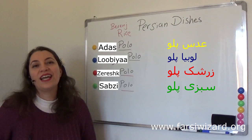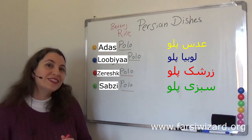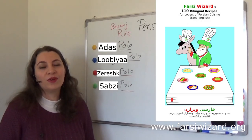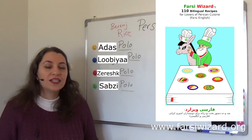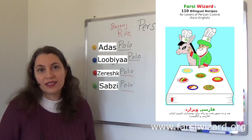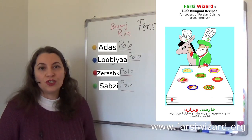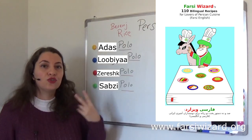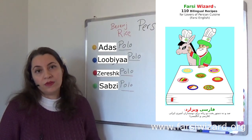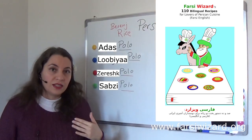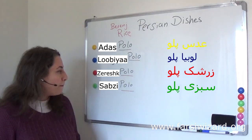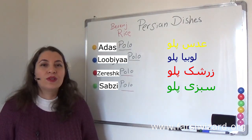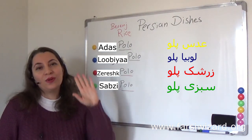Now you know all of these wonderful names, but do you know how to make these dishes? If not, you can check out my book — 110 Bilingual Recipes. It's a wonderful book that will teach you how to make these dishes and also teach you a little Farsi. It's a bilingual book; every recipe contains two pages of ingredients and method of preparation side by side in English and Persian. I hope you enjoyed this short lesson on Persian dishes — I look forward to seeing you in the next class. Khodafez!